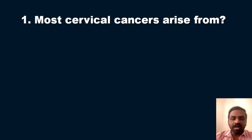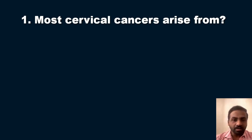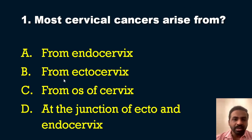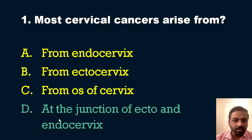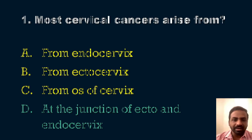The first question is from oncology: Most cervical cancers arise from where? The options are: A) the endocervix, B) the ectocervix, C) the os of the cervix, and D) at the junction of ecto and endocervix. The answer is option D — at the junction of ecto and endocervix.